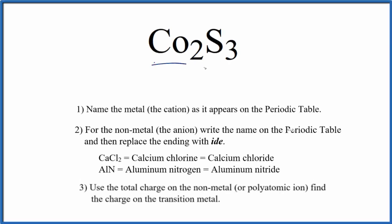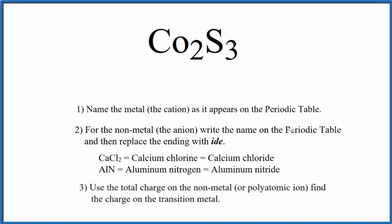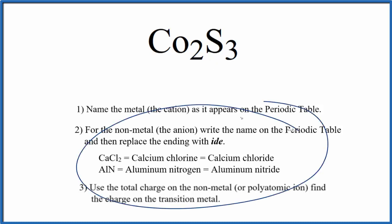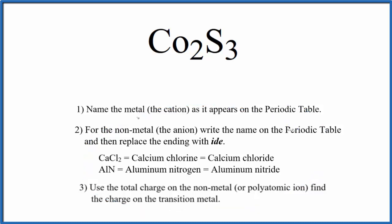To write the name for CO₂S₃, we first need to recognize that cobalt is a transition metal, and S, sulfur, is a non-metal. So we're going to use these rules to write the name for CO₂S₃.